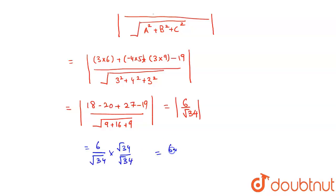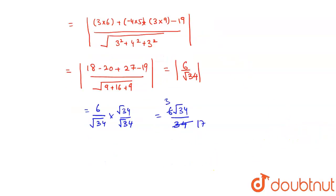So, I get 6√34/34. So, I can cancel this 3, 17. So, what is my final answer? My final answer is 3√34/17. And that's the answer. I hope you understood the explanation. Thank you.